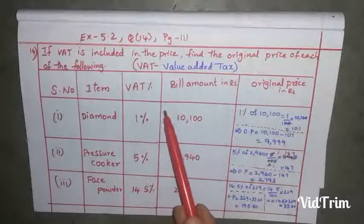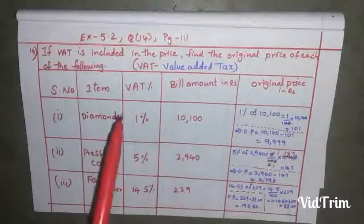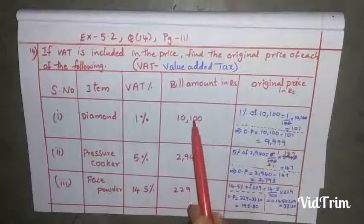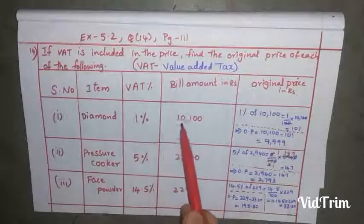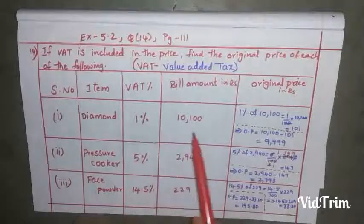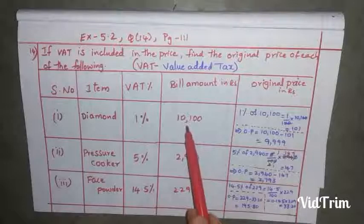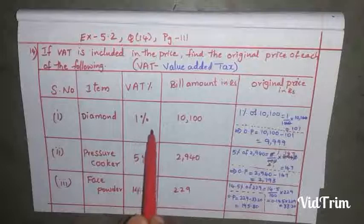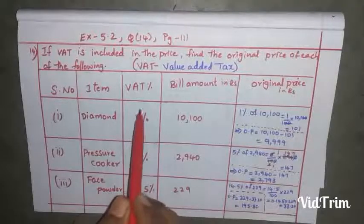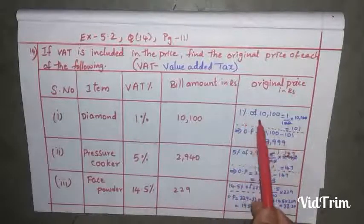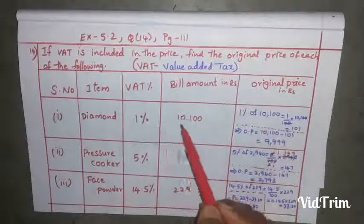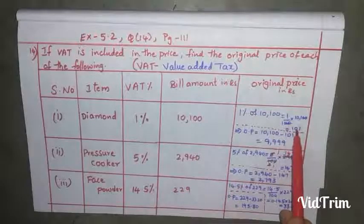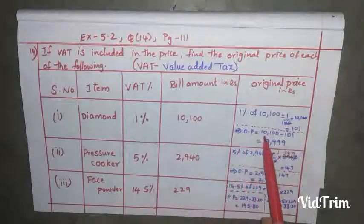After adding value added tax, we need to find the original price. The original price equals the bill amount minus the VAT. Since VAT is given in percentage, we convert it to money and then subtract. So first, we find 1% of 10,100, which is 101.